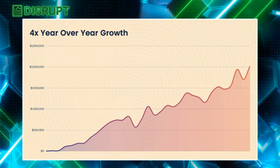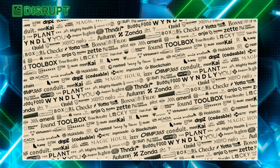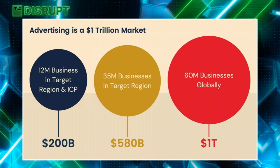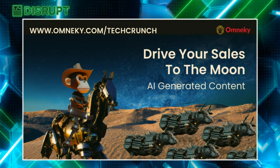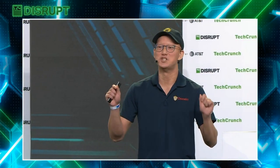We're now over $2 million in revenue, growing 4X year-over-year, and trusted by over 100 happy customers. Advertising is a trillion-dollar market, and our ICP is the 12 million businesses currently advertising online today. OmniKey is the first data-driven generative AI platform — the content we generate actually delivers conversions because it's backed by real-time marketing data. Today we're excited to announce the launch of our self-serve product, and the first 30 customers that sign up via OmniKey.com/TechCrunch get a 10% discount on their first year. Sign up today and drive your sales to the moon with AI-generated content.